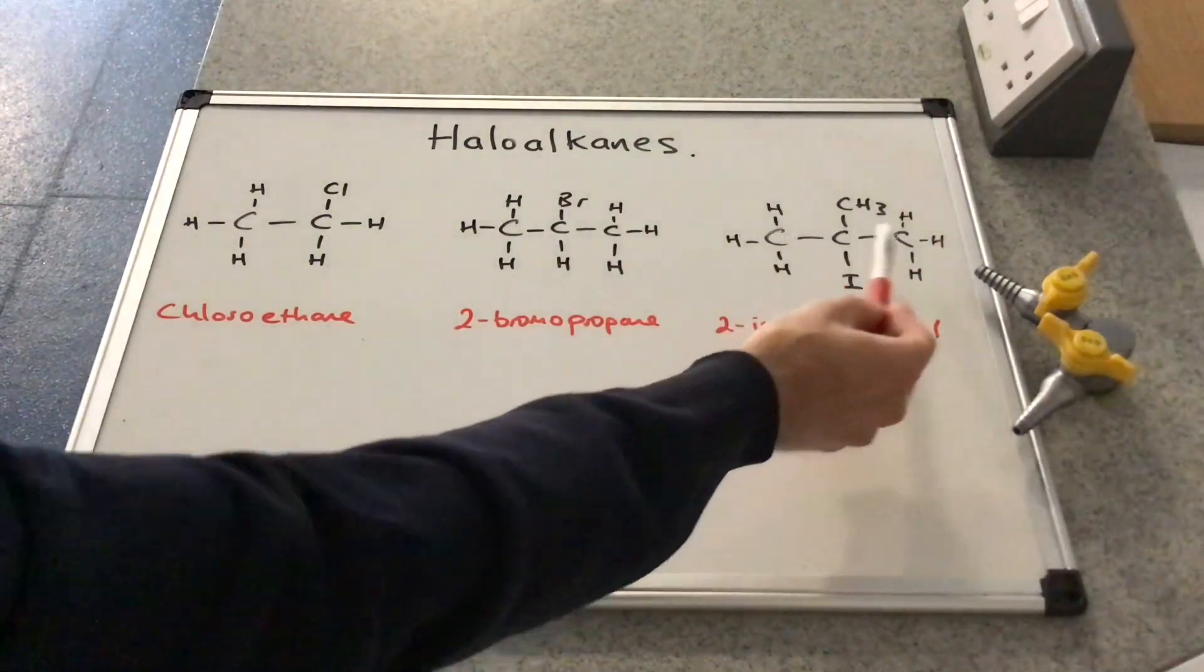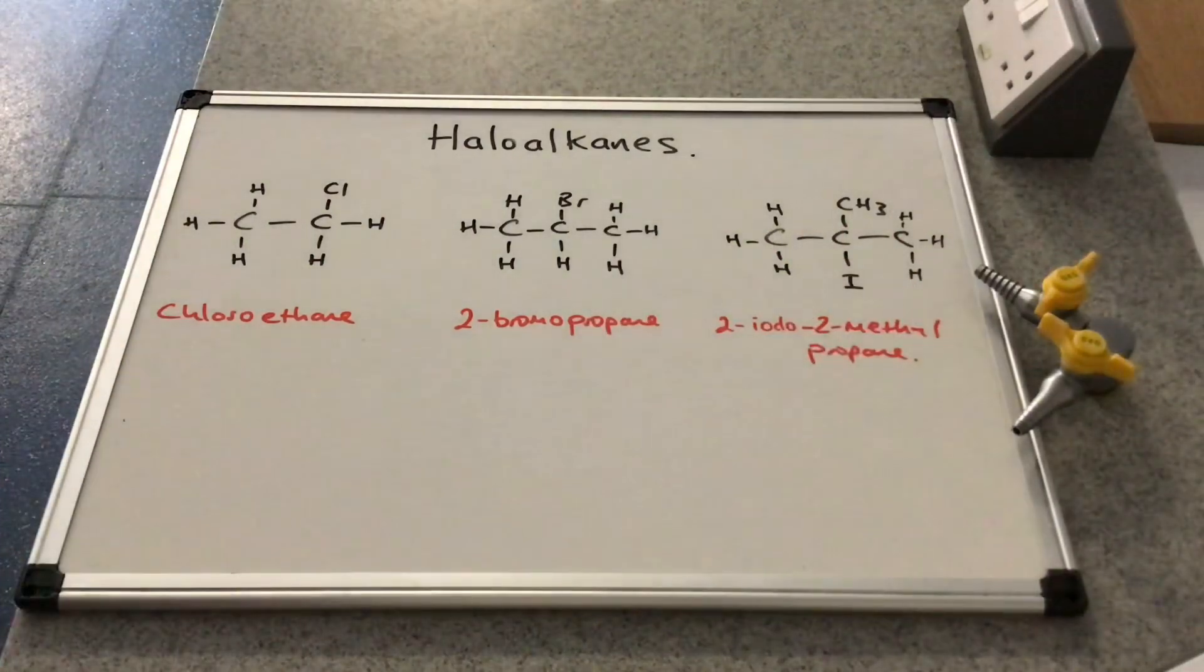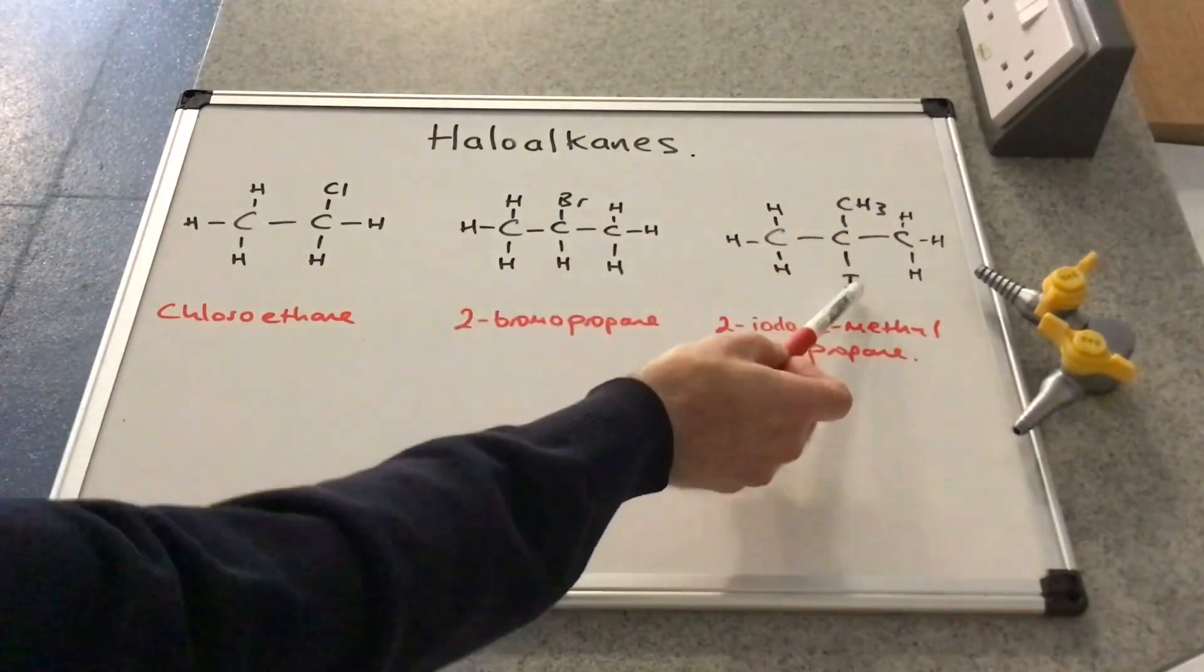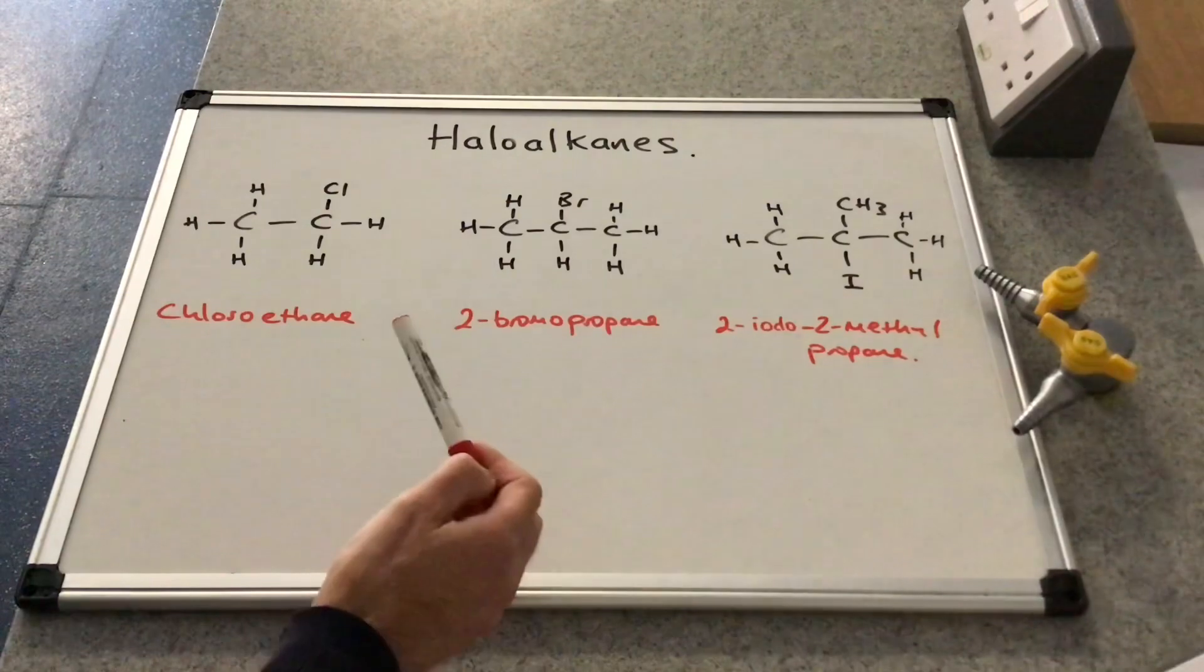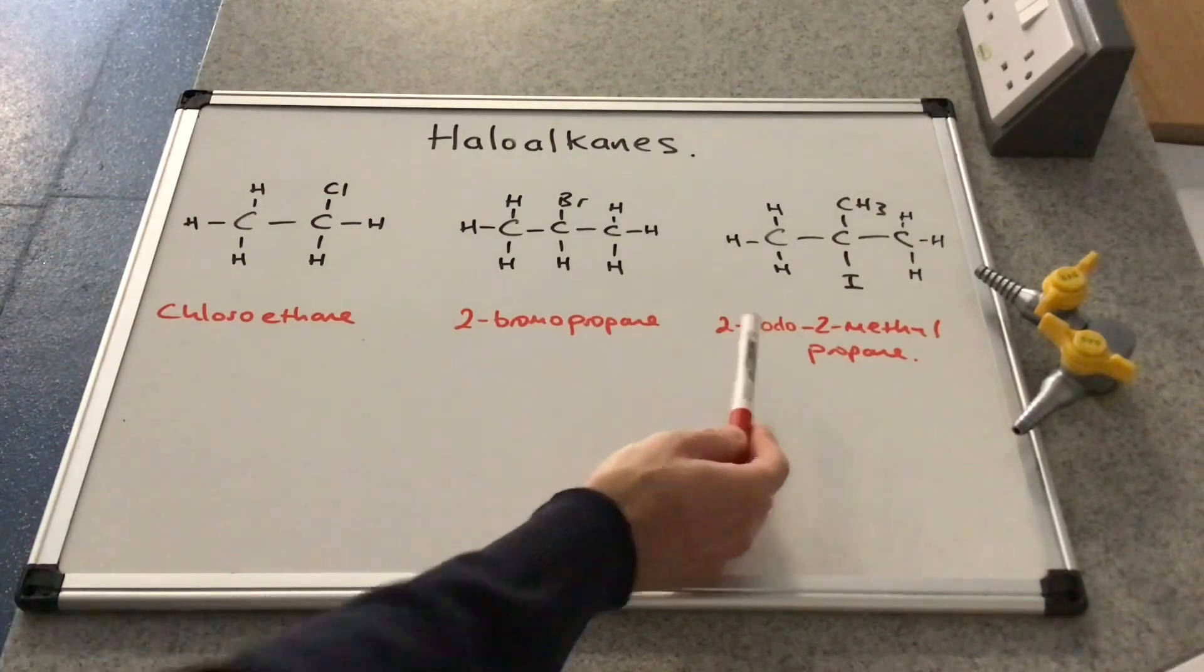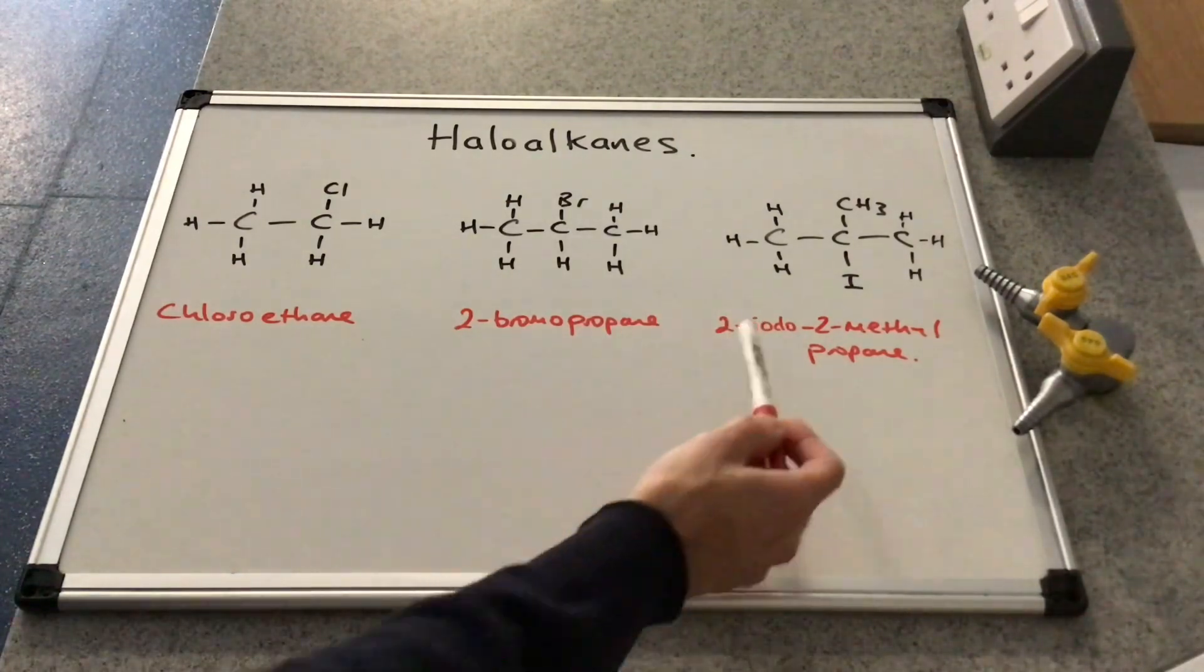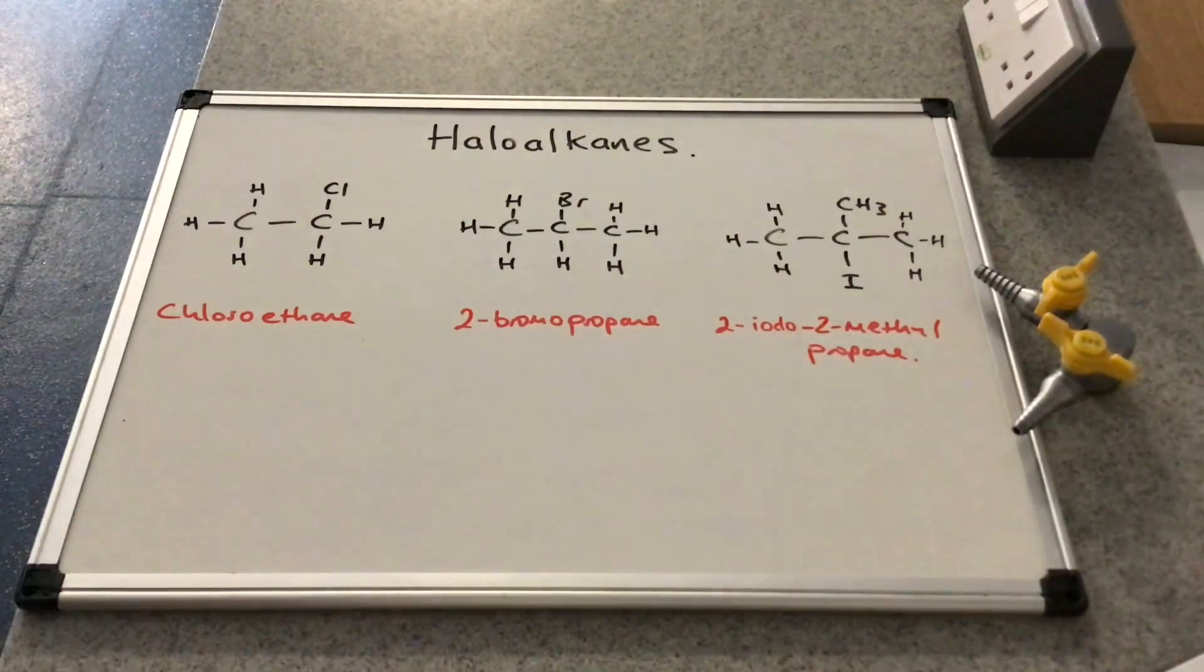And the third one, we've got essentially a propane molecule with a methyl group and an iodine on that central carbon, so carbon number two. So using the alphabet rule, the iodo would come first because it begins with an I, which is before M in the alphabet. So 2-iodo-2-methyl-propane.